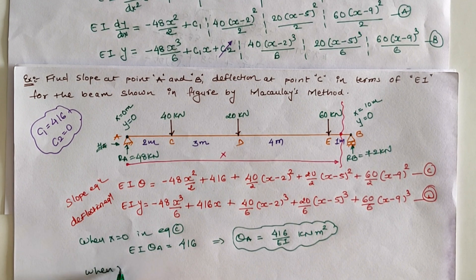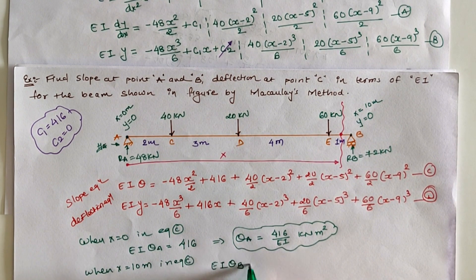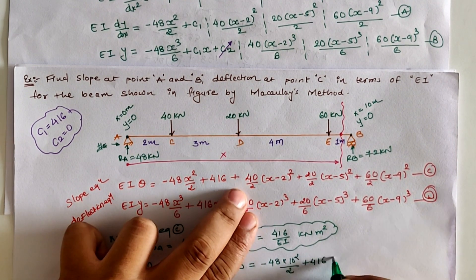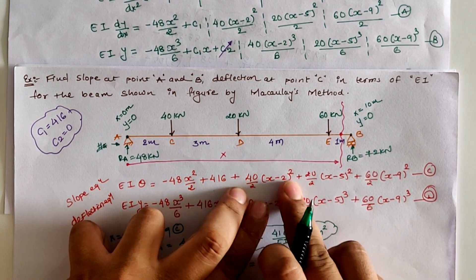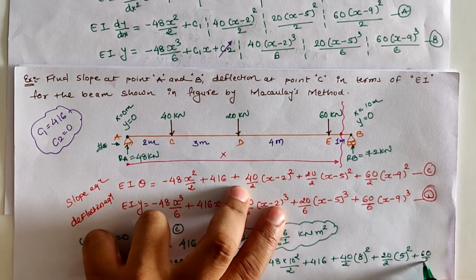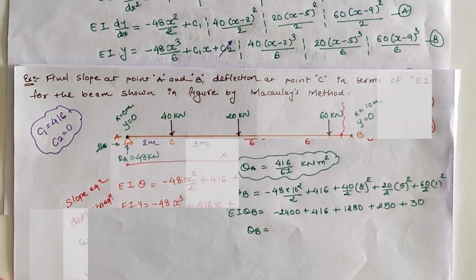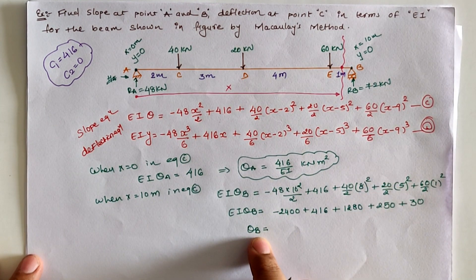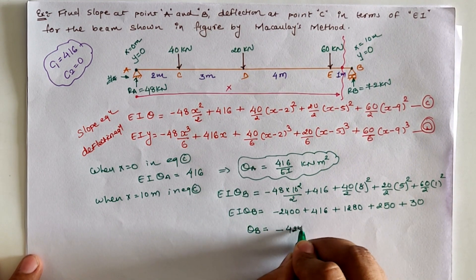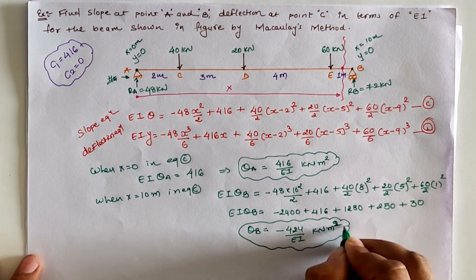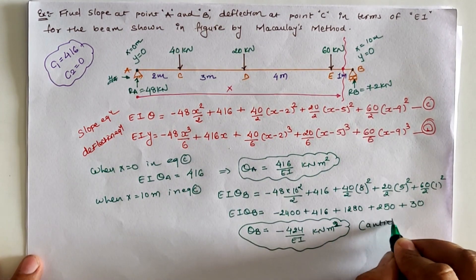Similarly, putting x = 10 meters into the slope equation, we get the slope at location B: −48×(10²)/2 + 416 + (40/2)×(10−2)² + (20/2)×(10−5)² + (60/2)×(10−9)¹, where (10−2)=8, (10−5)=5, and (10−9)=1. The value of θB = −424/EI in kilonewton·meter² units. The negative sign indicates the slope at B is in the anti-clockwise direction.